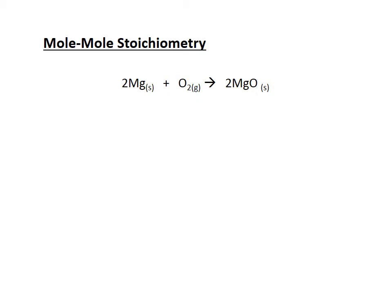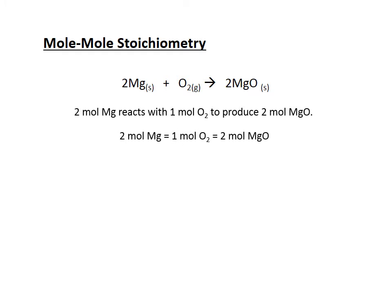Let's talk about what a balanced chemical equation means. What I have here is a simple balanced chemical equation where two magnesium atoms are reacting with one oxygen molecule to produce two units of magnesium oxide. In the grander scheme of things, two moles of magnesium atoms react with one mole of oxygen molecules to produce two moles of magnesium oxide.